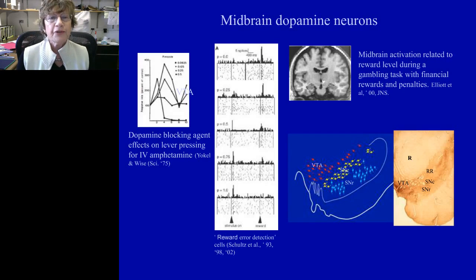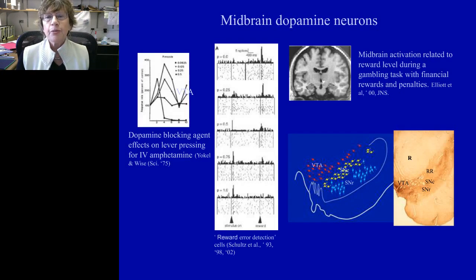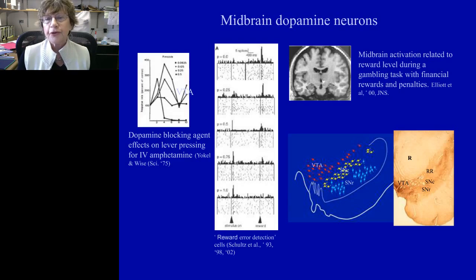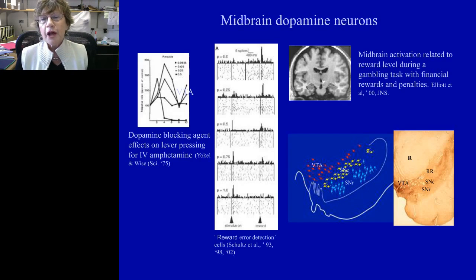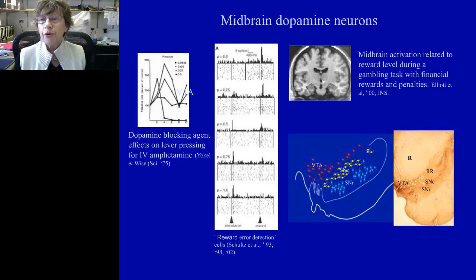Even before that, there are pharmacological studies demonstrating the effect of blocking dopamine on lever pressing for amphetamine. This shows dopamine activation in human imaging studies. Down here in the right part of this slide is the actual distribution of dopamine cells — the classic VTA, ventral tegmental area dopamine, associated with reward. But as Wolfram Schultz's studies clearly show, many cells in the substantia nigra pars compacta also demonstrate response to reward. In this section, we see a human coronal section stained for TH, one of the enzymes associated with dopamine.